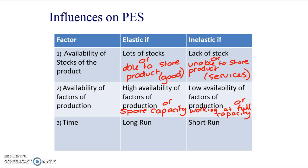The third factor is time — the same principle as with PED. In the long run it's easier for suppliers to change production quantities, whereas in the short run it's more difficult, especially the more complicated the production process is. Thinking back to house building: in the long run house builders can respond well to price changes, but in the short run it's difficult because there's a big lead time — the planning process plus the building process makes it roughly a two-year process.